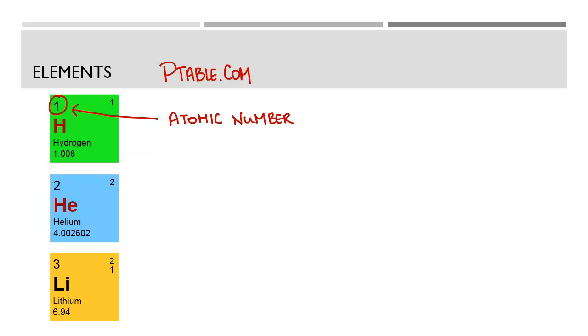This is called the atomic number. It is the most important number of every element. That tells us the number of protons. And you'll notice that no two elements have the same atomic number, which means that no two elements have the same number of protons, which means that the number of protons tells us what type of element we have.